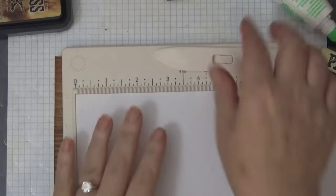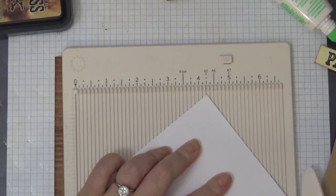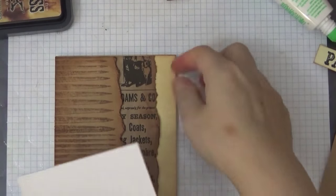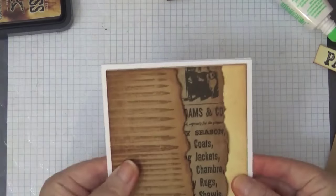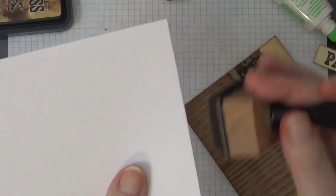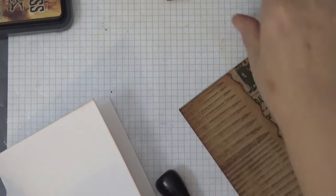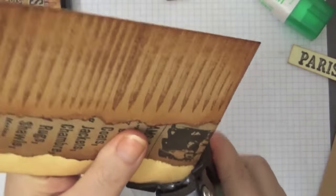I have an A2 size card base here. I'm using this Martha Stewart scoring board and the bone folder. Then I decide that I want to round the corners. Before that, I will put some color to the white cardstock using the vintage photo, but I don't want to cover up the entire white. I just want the edges. I'm using the 1.5 inch crop-a-dile to round the corners.